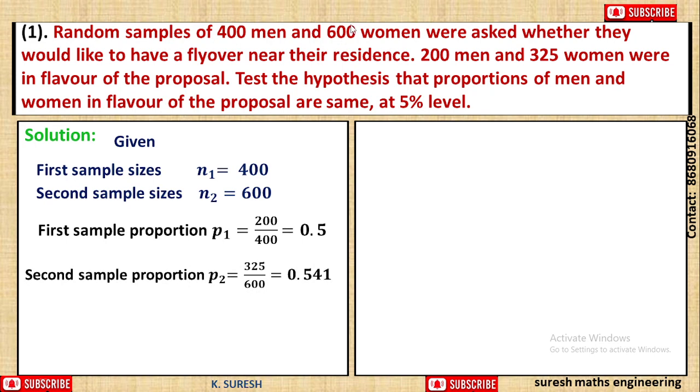Next, out of 600 women, 325 women favor the proposal. We get p2 as 325 by 600, which equals 0.541.